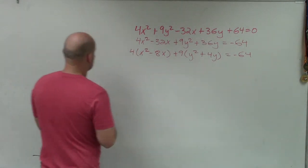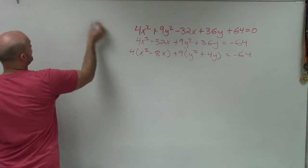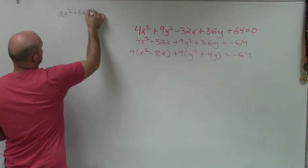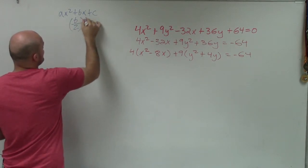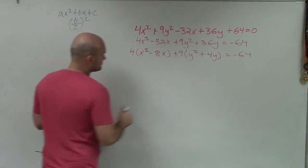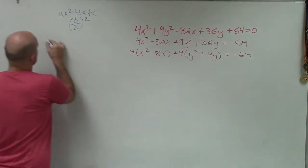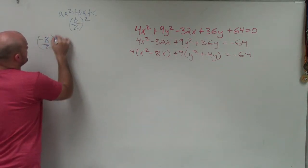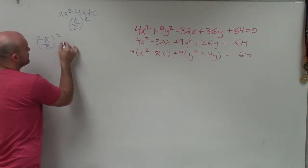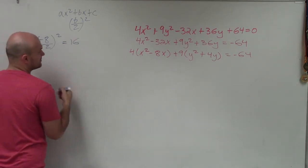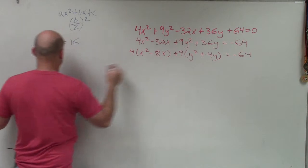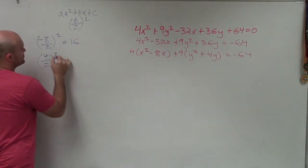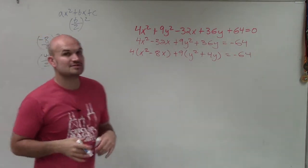To produce that, when we have ax² + bx + c, we take b divided by 2 and square it. So -8 divided by 2 squared: -8 divided by 2 is -4, -4 squared is 16. Then 4 divided by 2, that's my b over here, 4 divided by 2 is 2, 2 squared equals 4. So I'm going to add a 16 inside this parenthesis and a 4 inside this parenthesis.